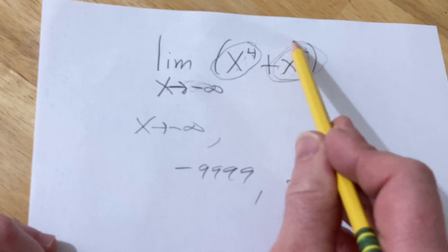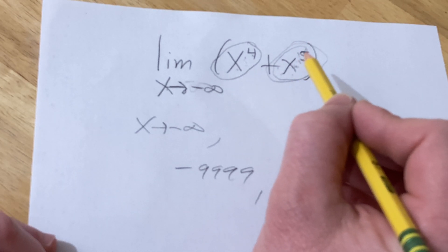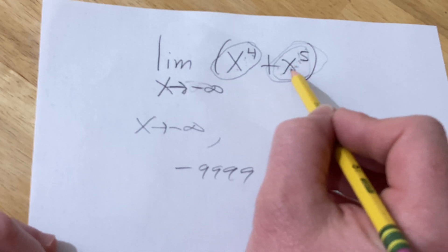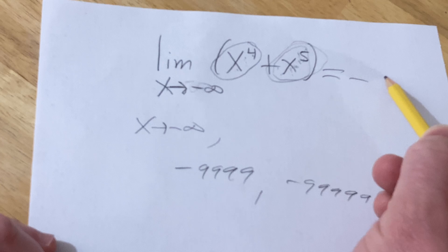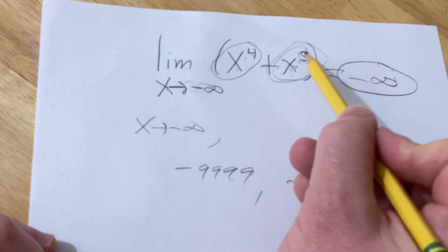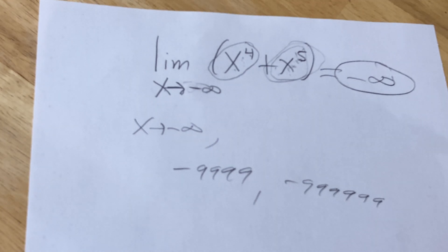So this is an overpowering term. This is definitely decreasing at a faster rate than this is increasing. So this is dominating. And so you're basically going to get negative infinity because this is a higher exponent. And that's the idea. Hopefully that made sense. Good luck.